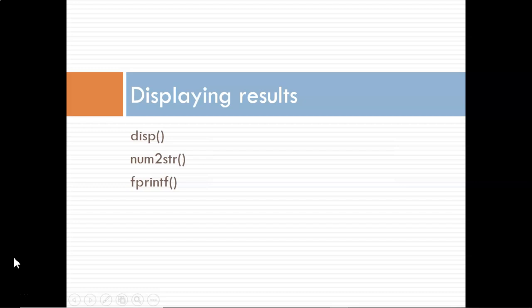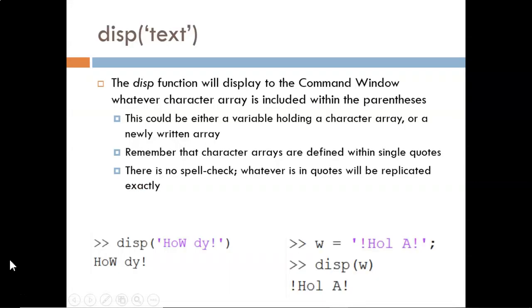In this video, we'll explore a couple different ways of displaying results in the command window. The first function we'll look at is DISP, short for display. This is the simplest way of causing text to display in the command window.